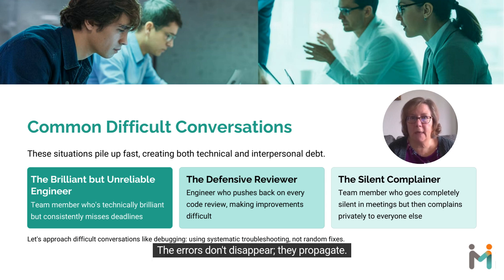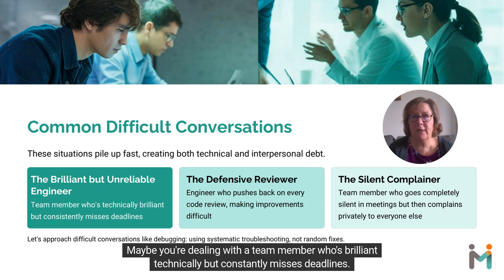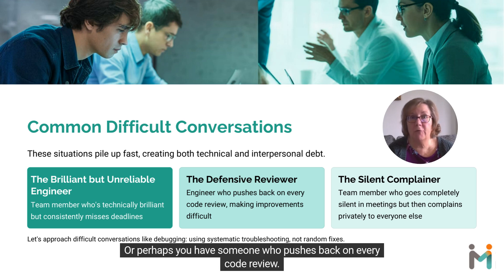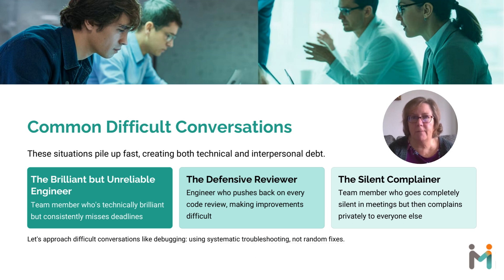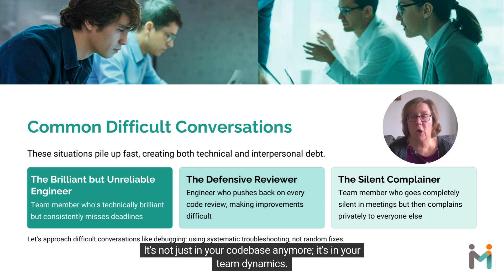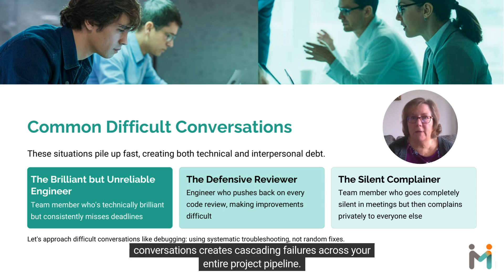The errors don't disappear — they propagate. Performance degrades. System instability increases. Eventually, you get a critical failure that could have been prevented with proper error handling. Maybe you're dealing with a team member who's brilliant technically but constantly misses deadlines, or someone who pushes back on every code review, or an engineer who goes completely silent in meetings but then complains privately to everyone else. These situations pile up fast, and the technical debt is not just in your codebase anymore — it's in your team dynamics.